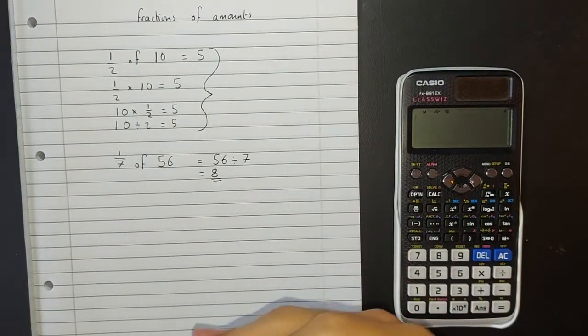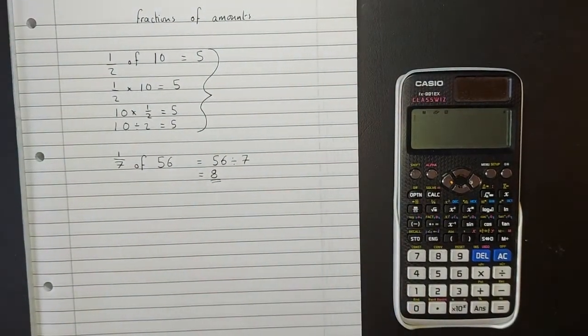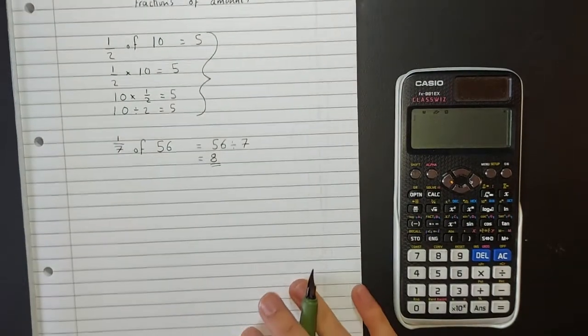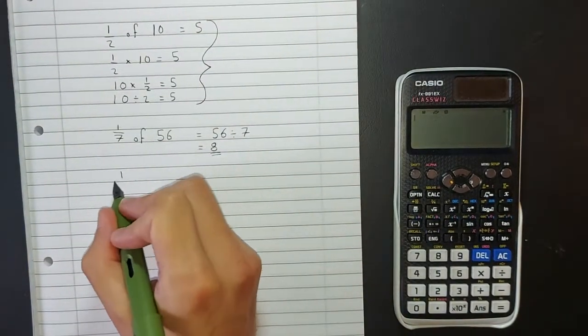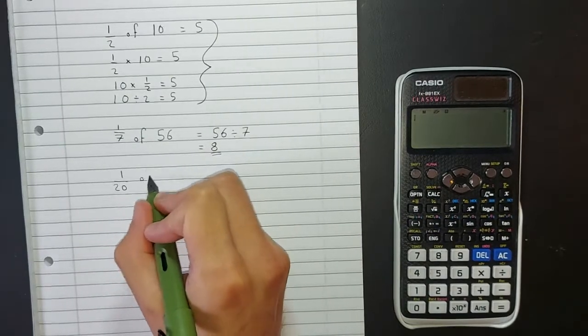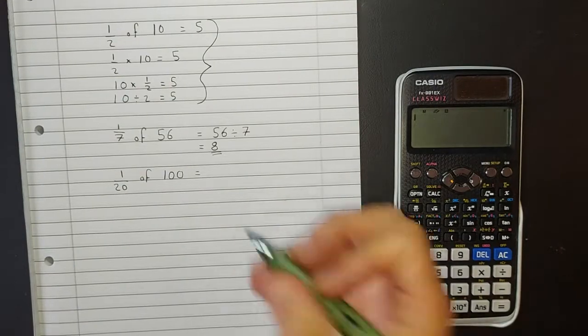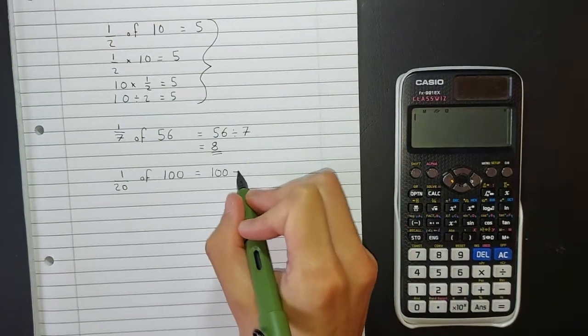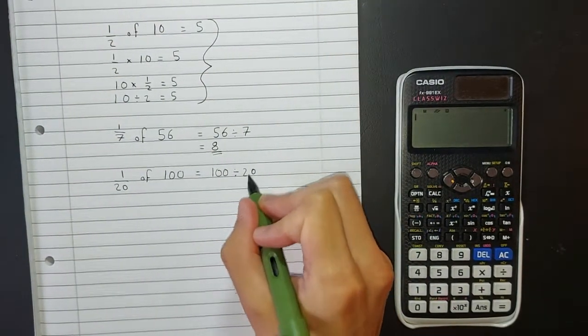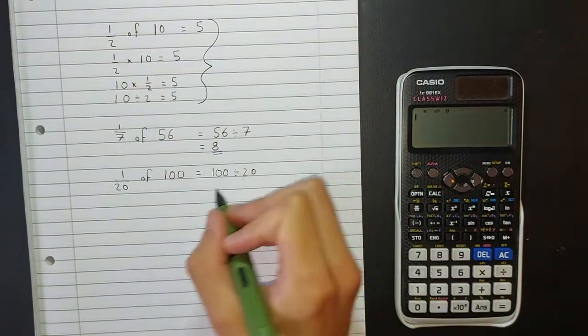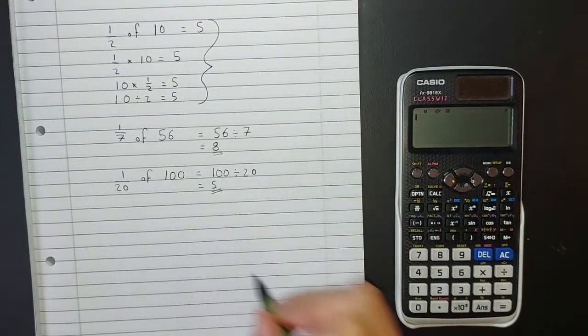So finding one-seventh of 56 is the same as taking 56 and dividing it by seven. Let's follow this logic for the next one. That would be the same as taking your hundred and splitting it into twentieths, so dividing it by twenty, which would get us an answer of five.